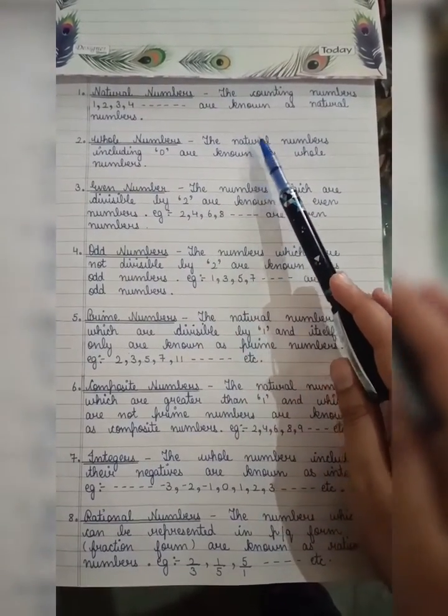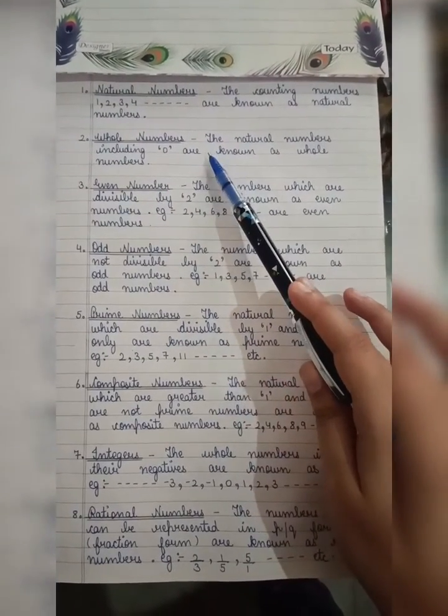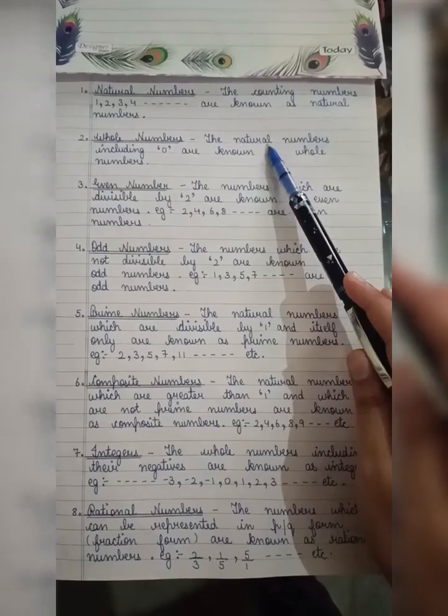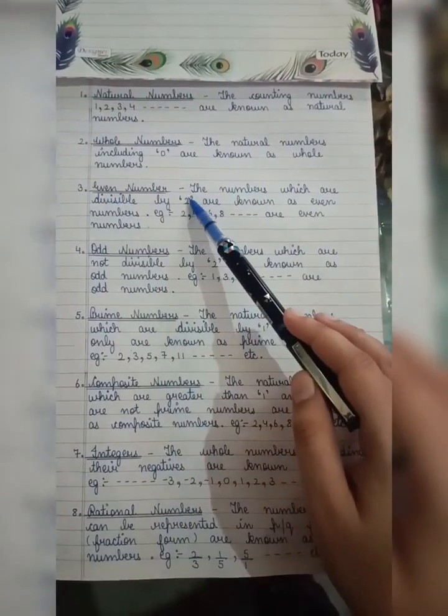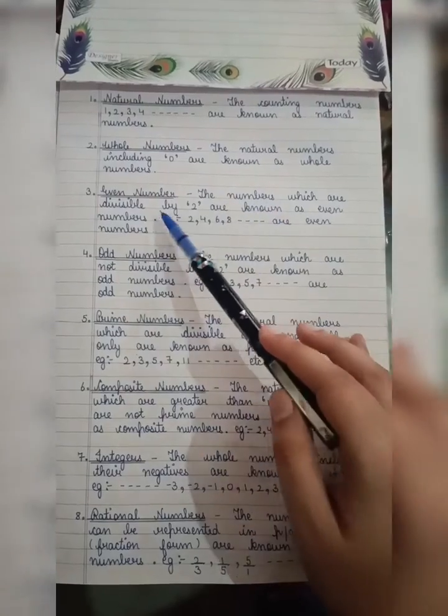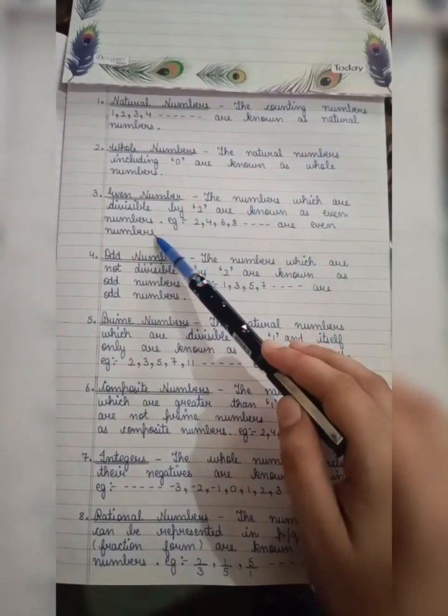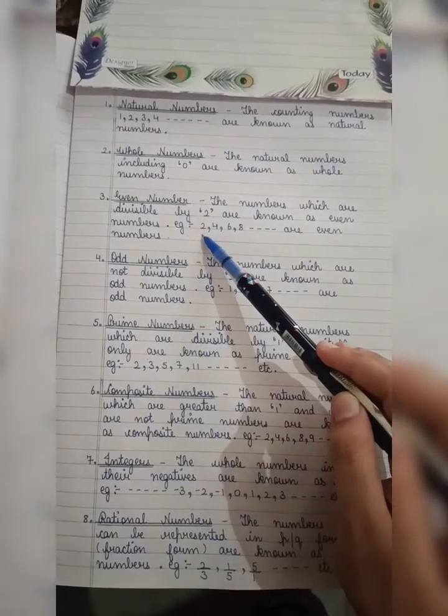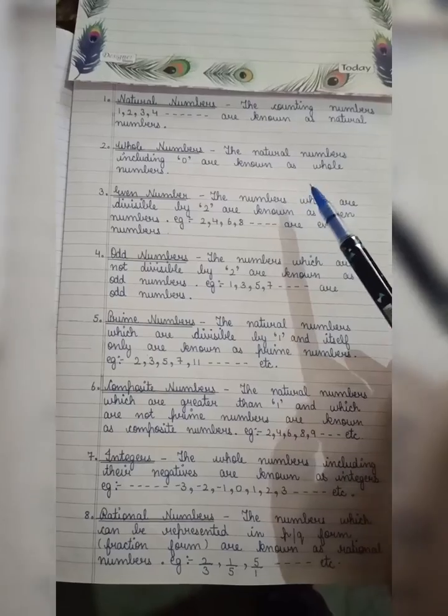Whole numbers - the natural numbers including 0 are known as whole numbers. Even numbers - the numbers which are divisible by 2 are known as even numbers. Example: 2, 4, 6, 8, 10, etc.